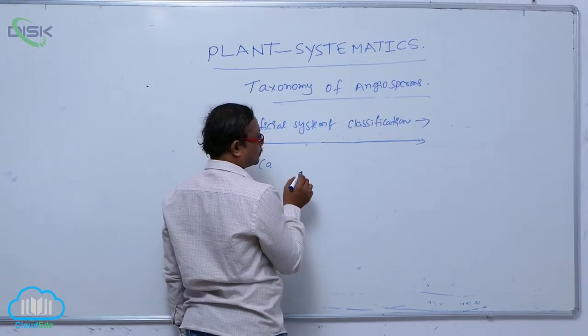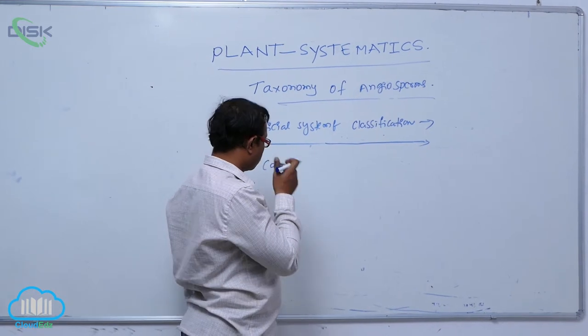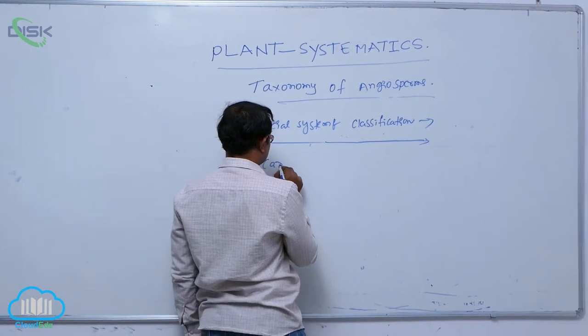The artificial system of classification was explained by Carolus Linnaeus.